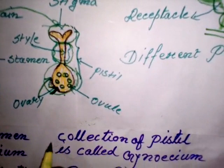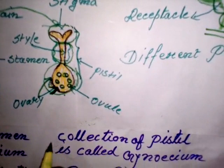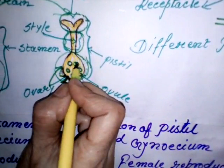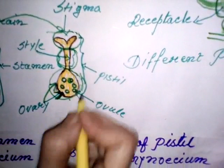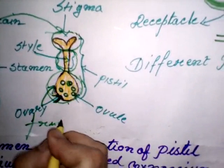After pollination, fertilization takes place inside the ovule. During this stage, the male gamete fuses with the female gamete. After that, the ovary changes into fruit and the ovule changes into seed.